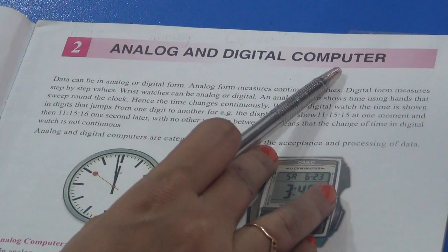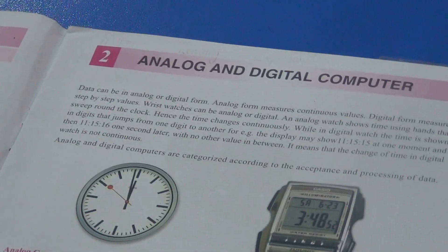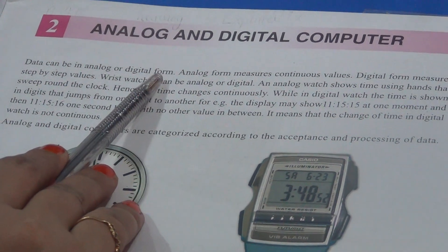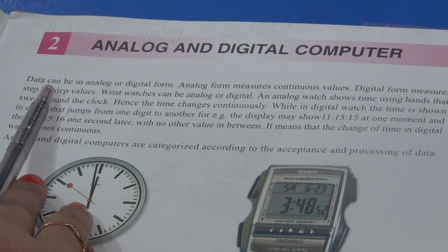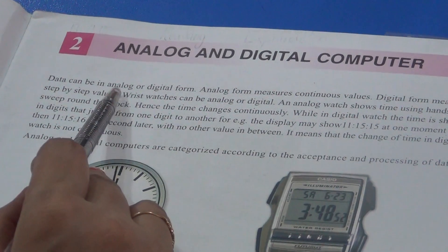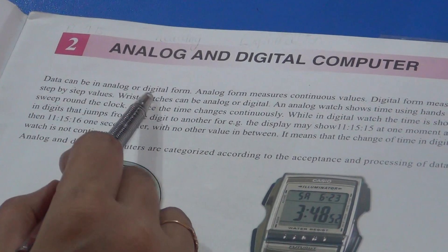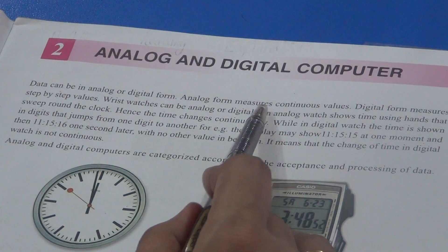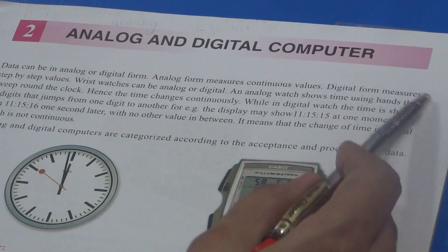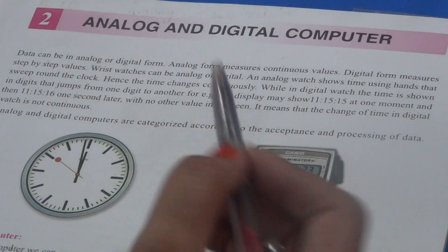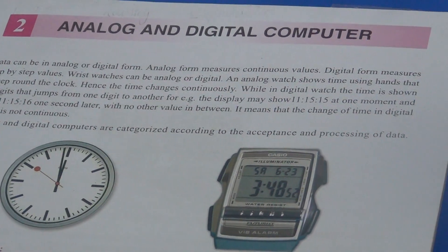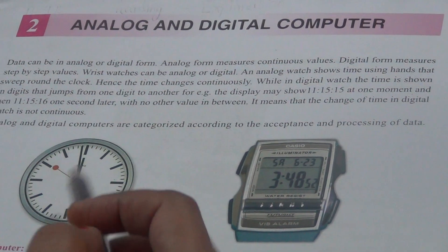Analog and Digital Computer. Computer can be in Analog or Digital form. Data can be in Analog or Digital form. Data hamare paas do form mein hota hai — ya to Analog mein ya Digital mein. Analog form measures continuous values, while Digital form measures step by step values.